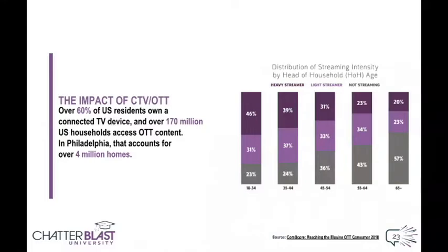If you're thinking only millennials and younger people are streaming TV, take a step back and look at this chart. It's skewed younger, but 43% of people 65 and older are streaming at home. Not to mention 60% of U.S. households own a connected TV device, and in a city like Philadelphia, that's over 4 million homes available for custom, targeted, relevant programmatic ad campaigns.